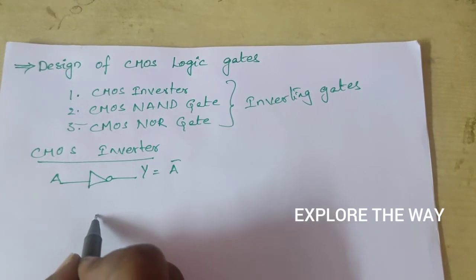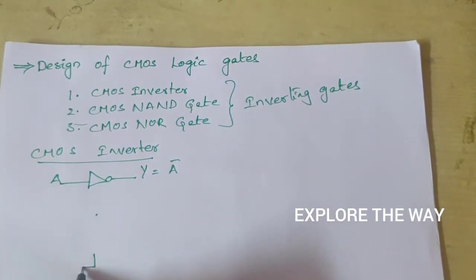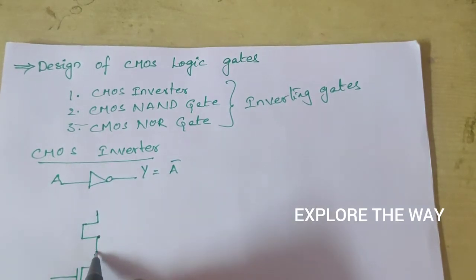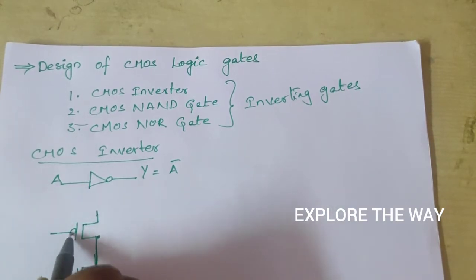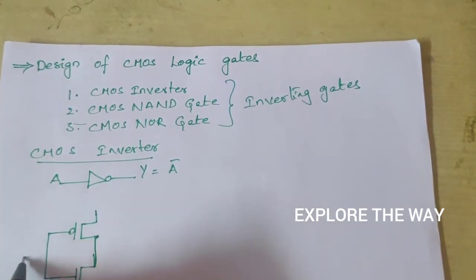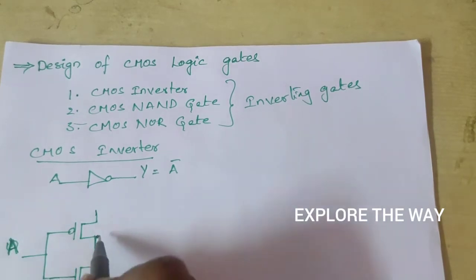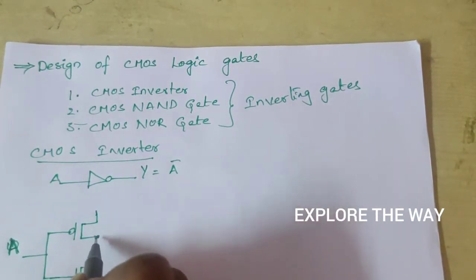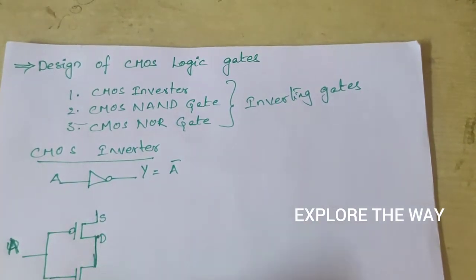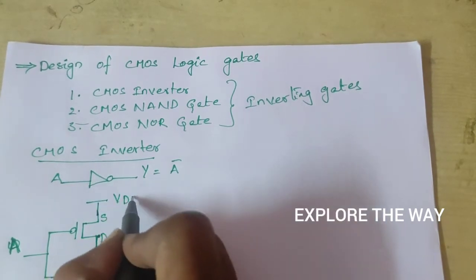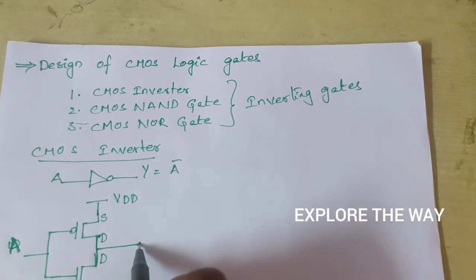The NMOS transistor should be connected as the pull-down transistor, and the PMOS transistor should be connected as the pull-up transistor. These two gates are connected together. This is the input A. This is the PMOS transistor with its source and drain. For the NMOS transistor, the source is at the lower potential. The source of the PMOS is connected to VDD. At the center we will take the output.